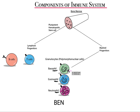Basophil is named so because it has components that stain with basic dye — it stains blue. Eosinophil stains red with eosin dye. Neutrophils stain with — you guessed it — neutral dye, and turn pink. Remember, there are other myeloid cells that have granules, but only these three are named granulocytes.